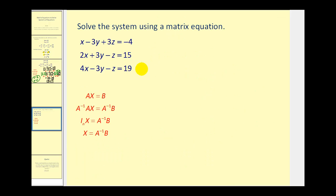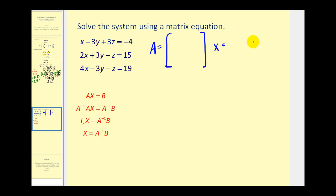We can apply the same idea for a system of three equations in three variables. Let's go ahead and set this up. We'll call matrix A the coefficient matrix, so it will be a 3 by 3 matrix. Then we'll have our variable matrix, and then we'll have our constant matrix — we'll call it matrix B. This is a 3 by 3, the variable matrix will be a 3 by 1, and the constant matrix will also be a 3 by 1.